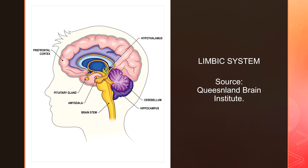Now let's talk about the limbic system. The limbic system is a system within your central nervous system that is largely responsible for a lot of these intrinsic human behaviors. You might have heard of the amygdala and fear — it controls a lot of behaviors, sexuality, and things like that.